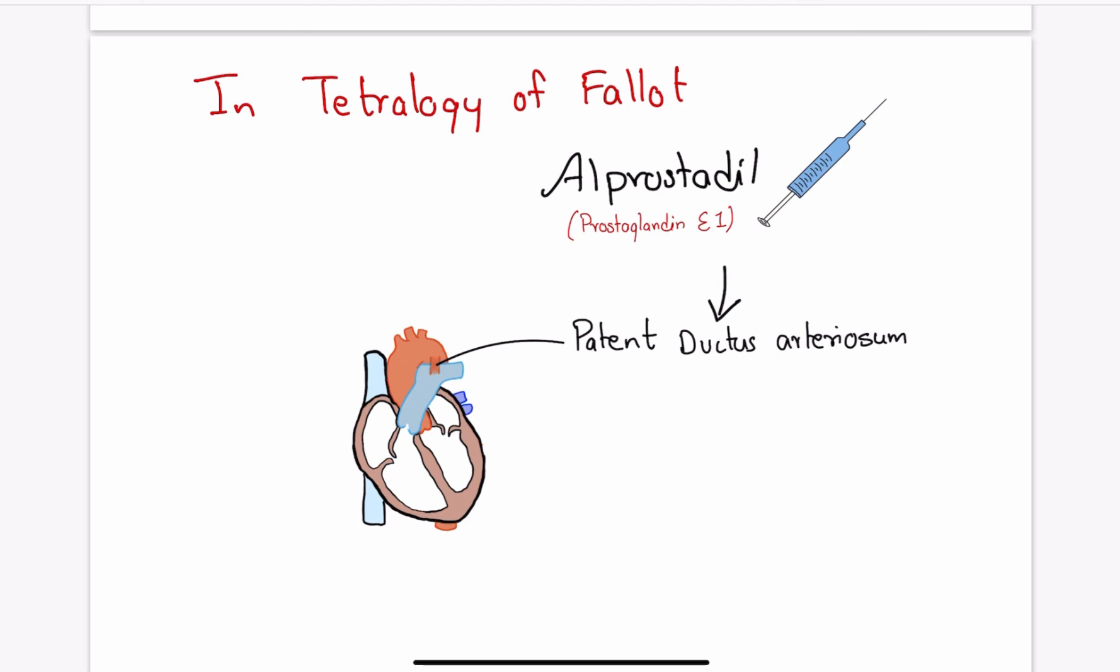Because in Tetralogy of Fallot there is very less blood flowing to lungs due to pulmonary stenosis. But if there is patent ductus arteriosus then blood can flow from aorta to pulmonary artery and then to lungs to become oxygenated. This can greatly improve the symptoms.